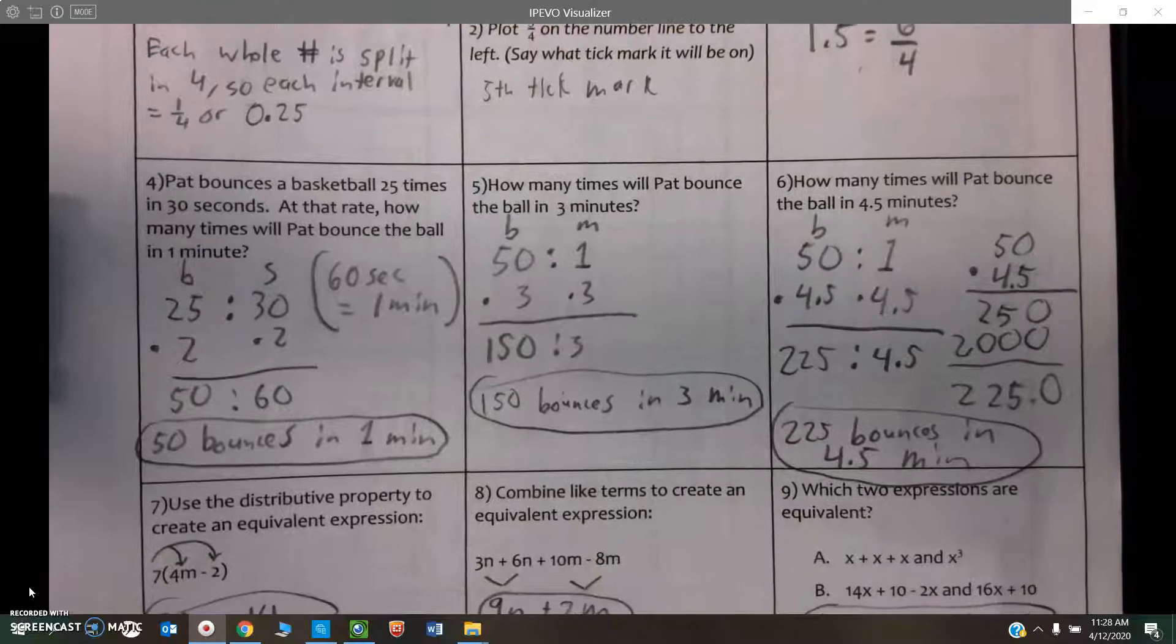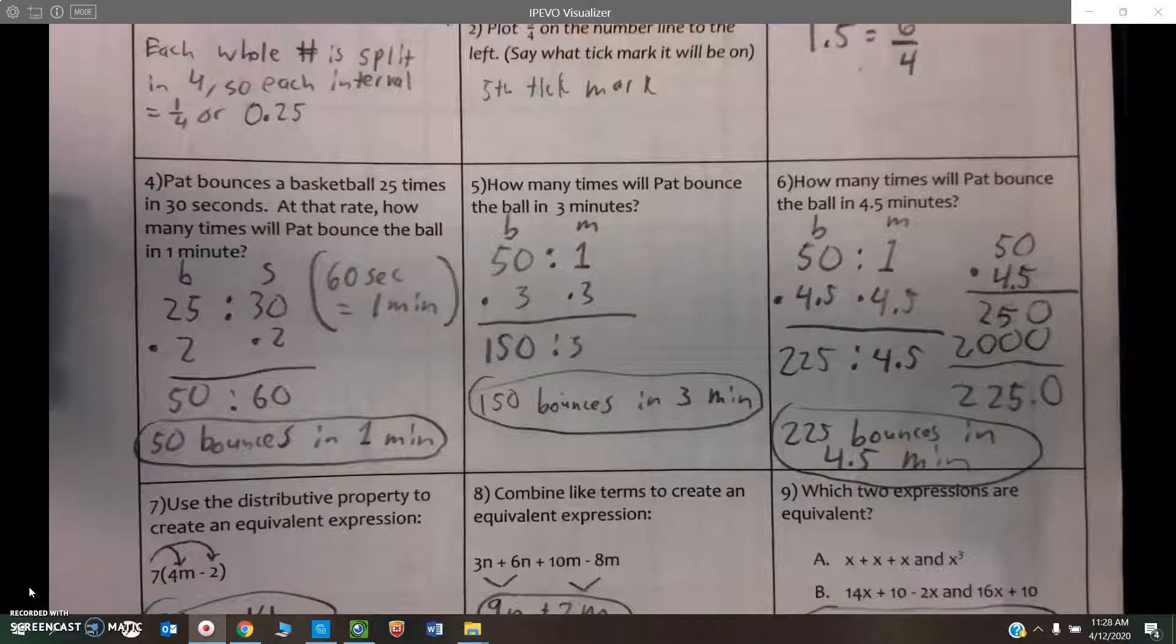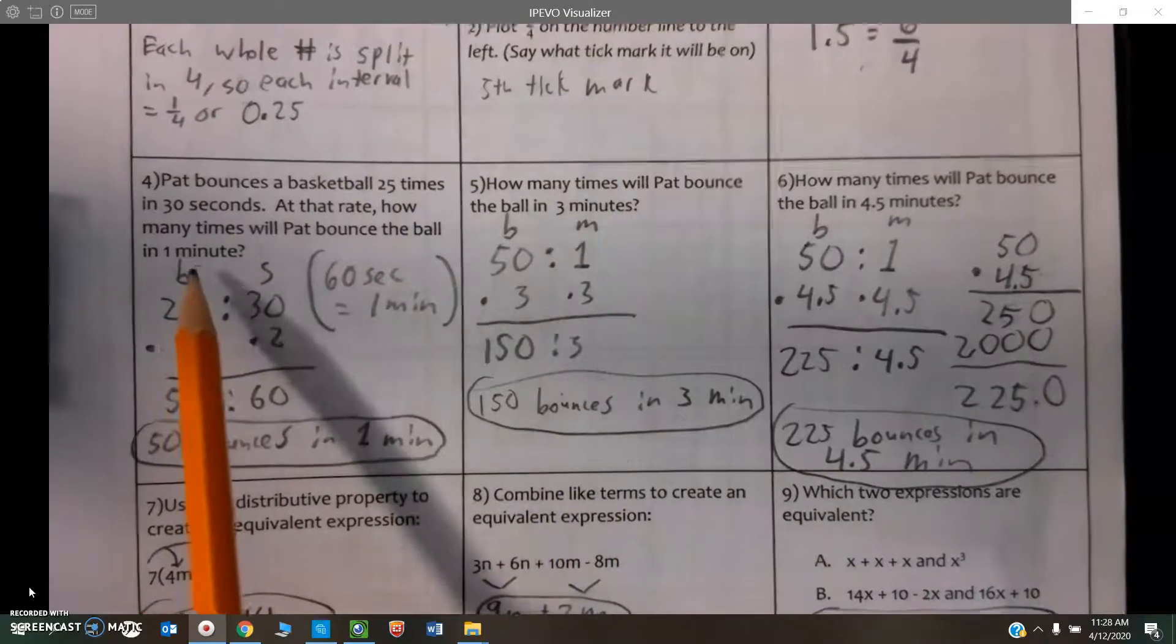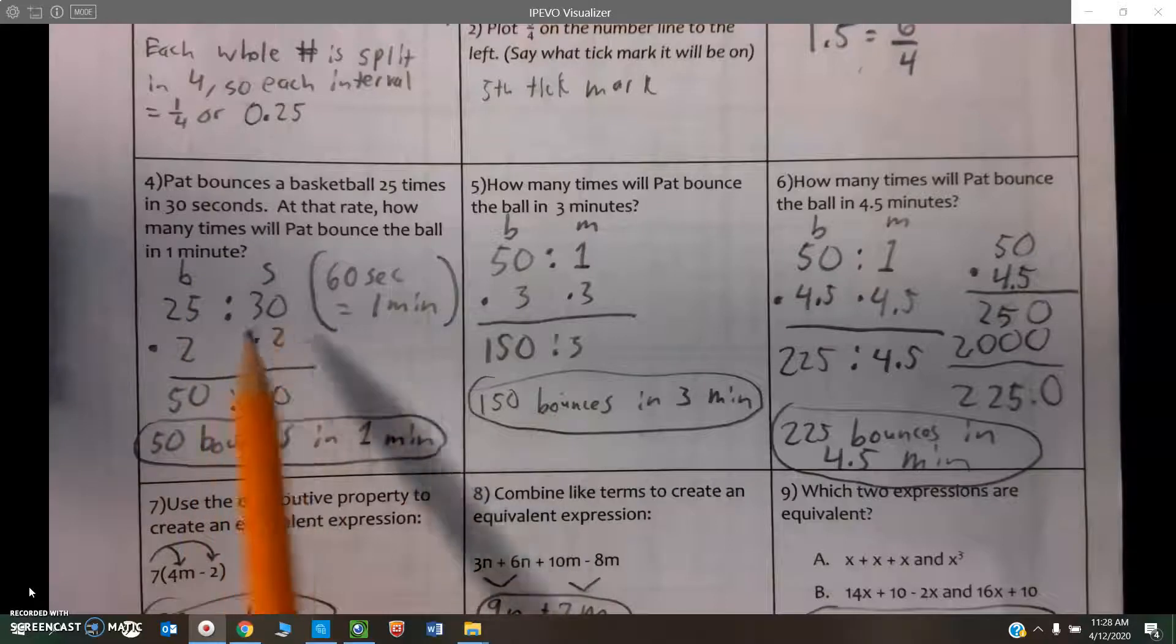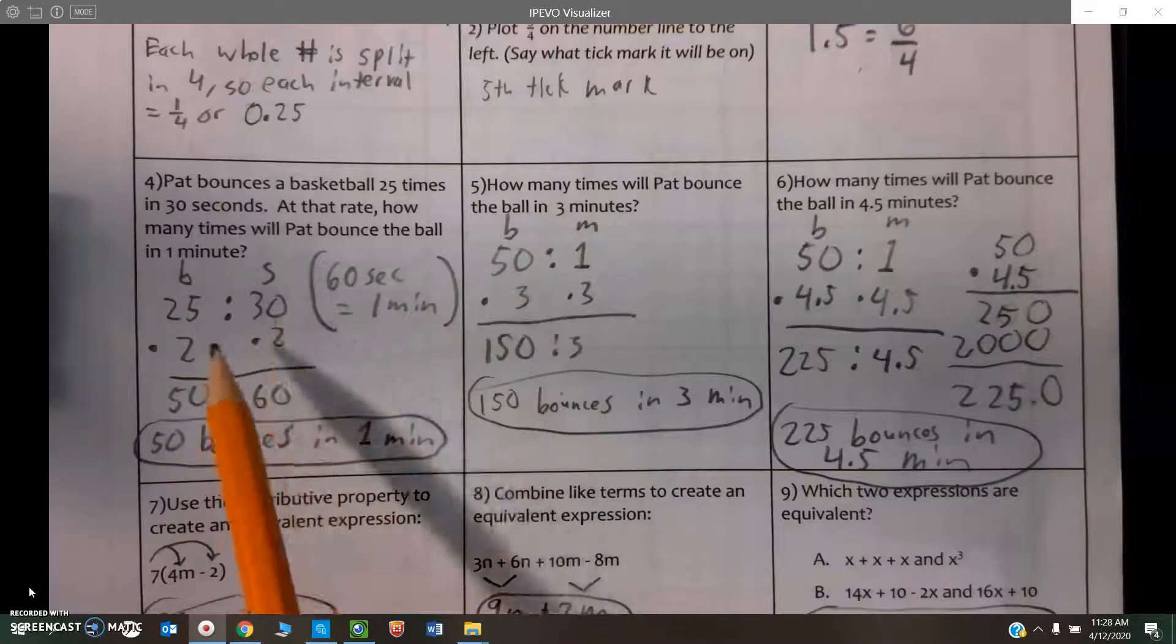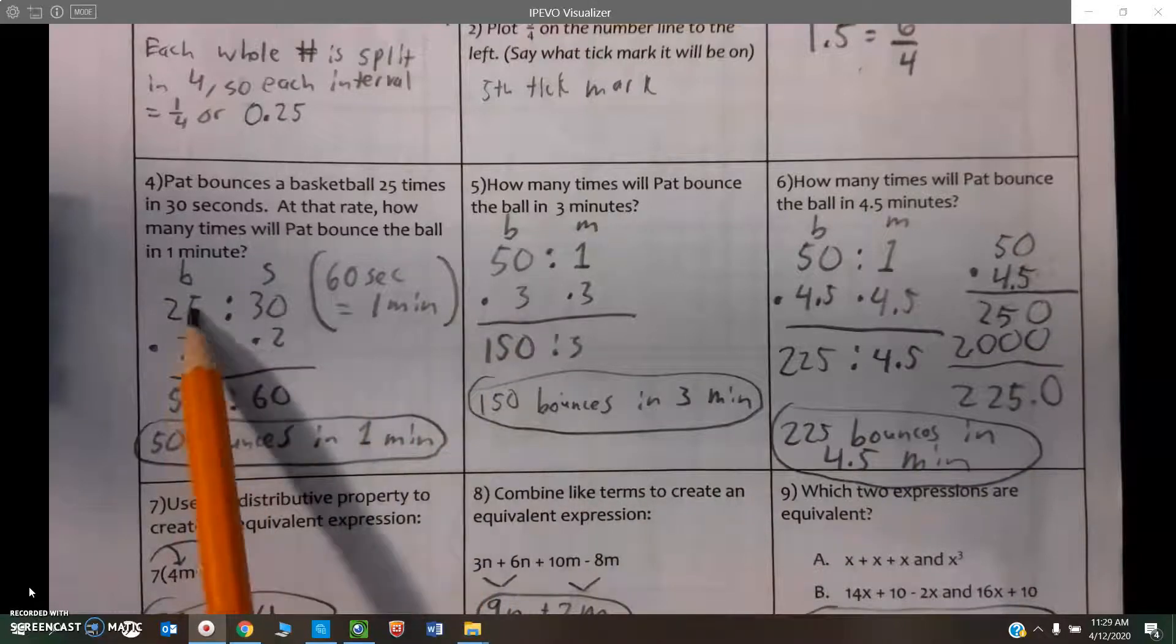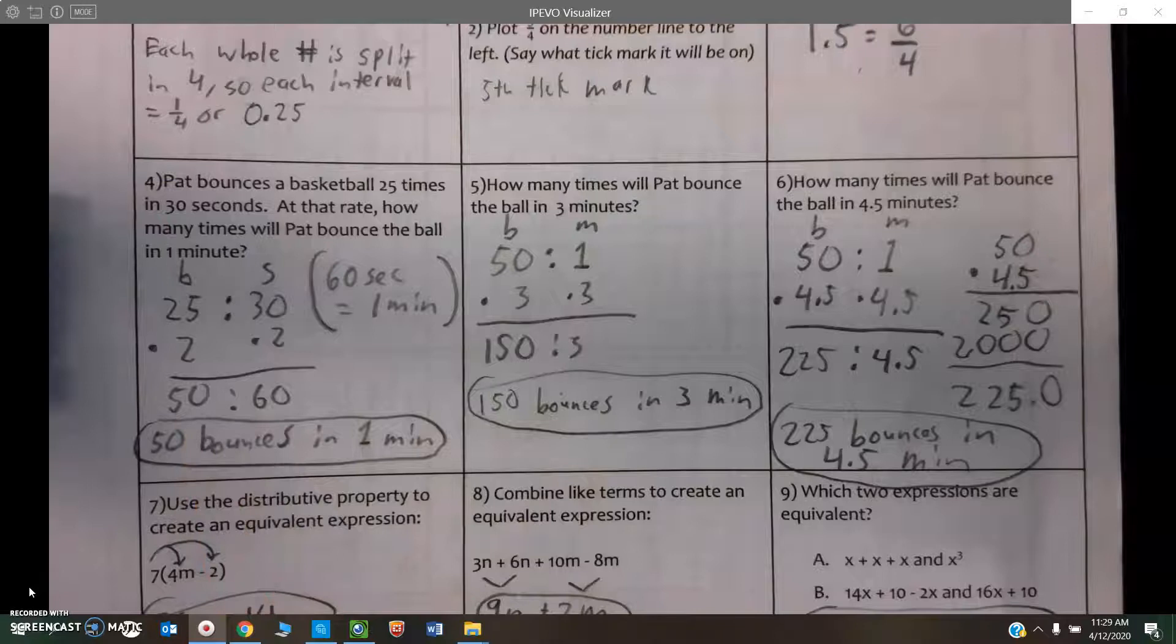Down below, once again, we're working with our ratios. We're comparing two different quantities. So Pat bounces a basketball 25 times in 30 seconds. They want to know how much he would bounce in one minute. So I wrote my ratio, and I know that 60 seconds is one minute, so I need to multiply this by 2 to take 30 seconds to 60 seconds, which is one minute. So if he does 25 in 30 seconds, he would do 50 in a minute, or 50 in 60 seconds.